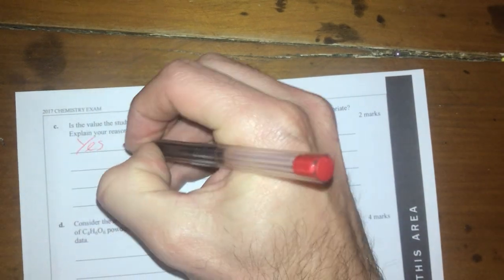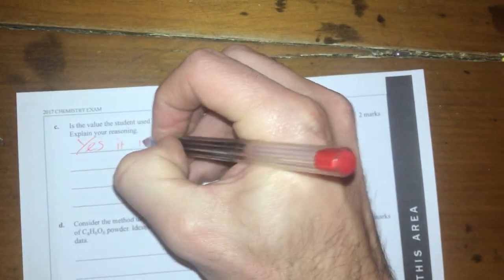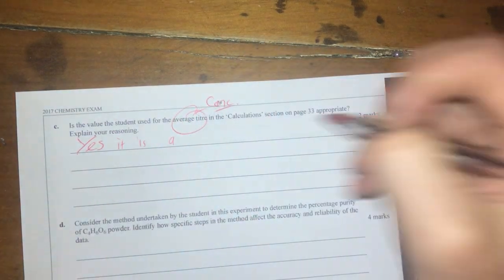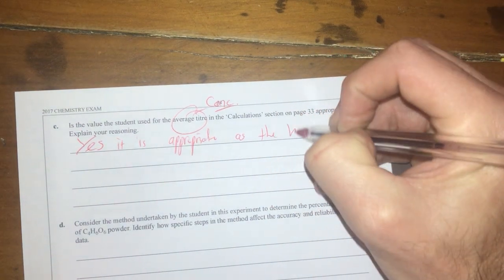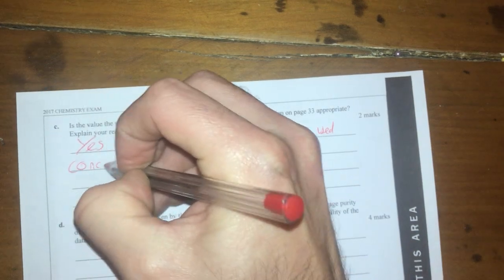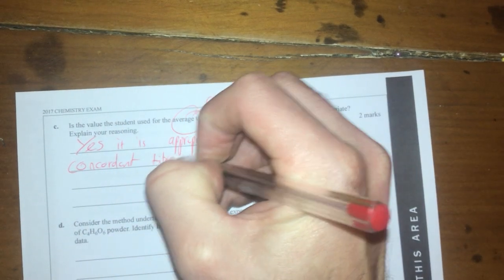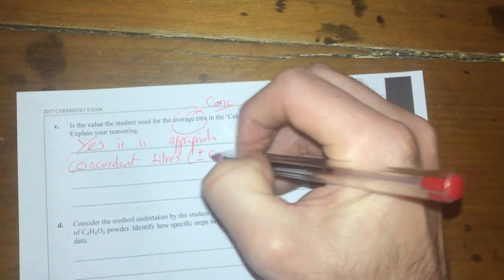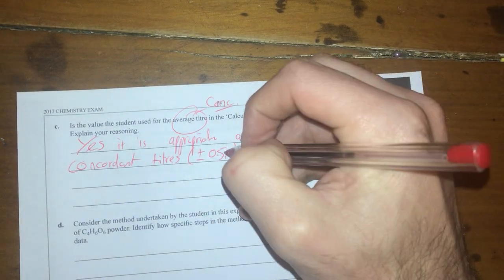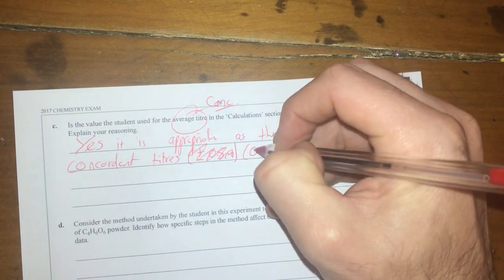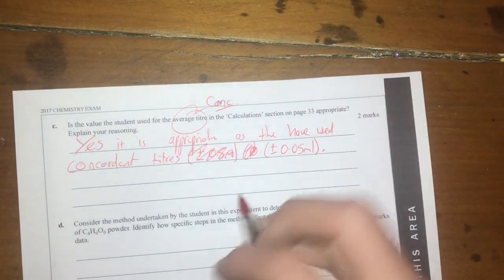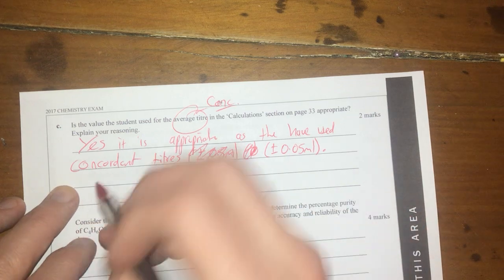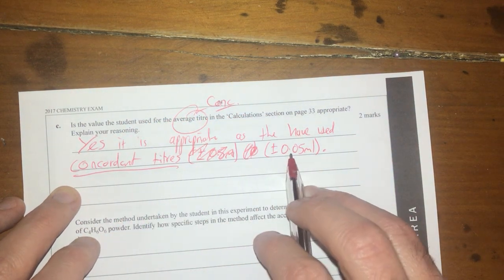So, yes, it is, did they say appropriate? Or valid, they say appropriate, appropriate, as they have used concordant titers, which are plus or minus 0.5 mL, sorry, 0.0, not 0.5, plus or minus 0.05 mL. So it's just me giving an understanding as to what concordant means. If I can define concordant, that's even better with a value, so I'm going to put that in there as well, so that's good.